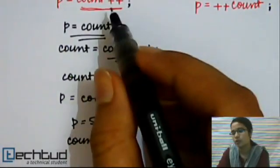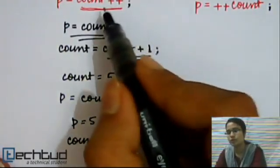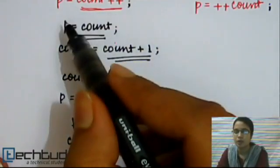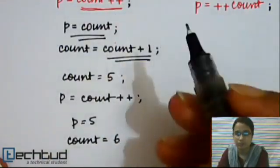In POST-increment operator, remember that first the value of the variable will be assigned to wherever it belongs (in P), and then the original value will be incremented.